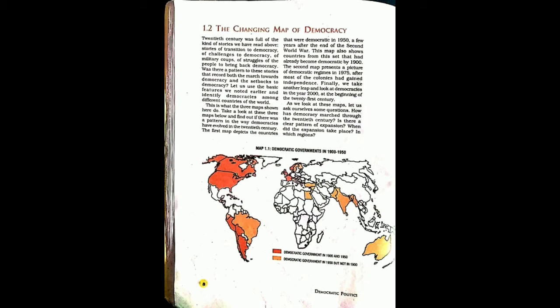Now we talk about the changing map of democracy. The 20th century was full of the kind of stories we have read about — stories of transition to democracy, of challenges to democracy, of military coups, and of struggles of people to bring back democracy. Was there a pattern to these stories that record both the march towards democracy and the setbacks to democracy?